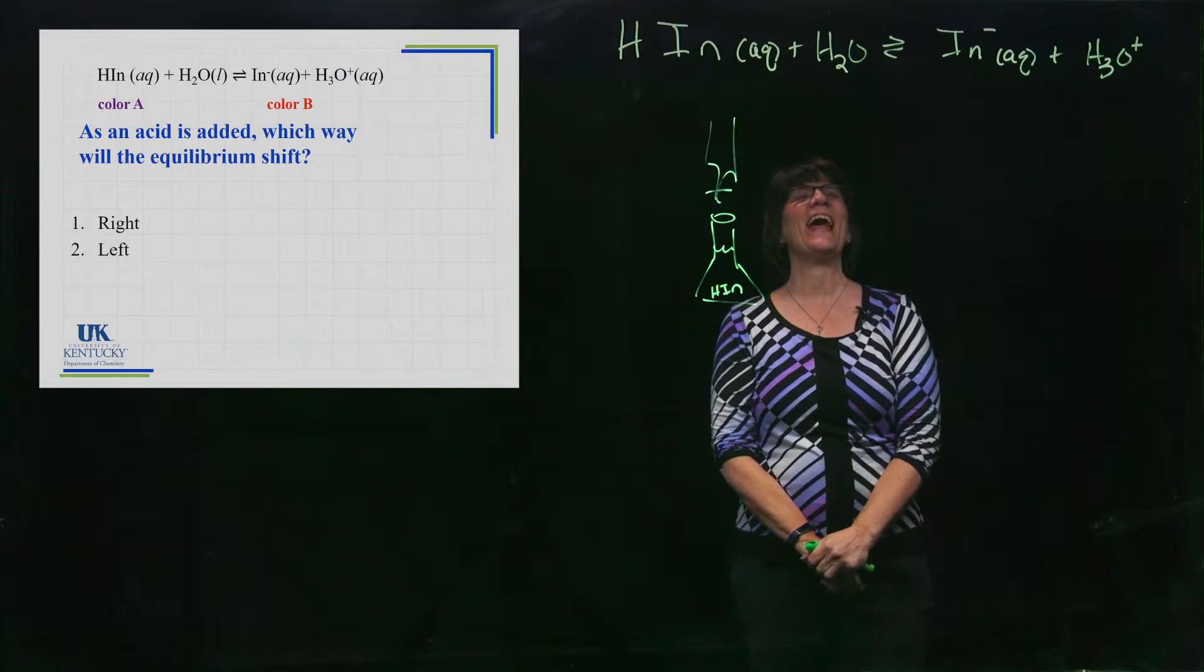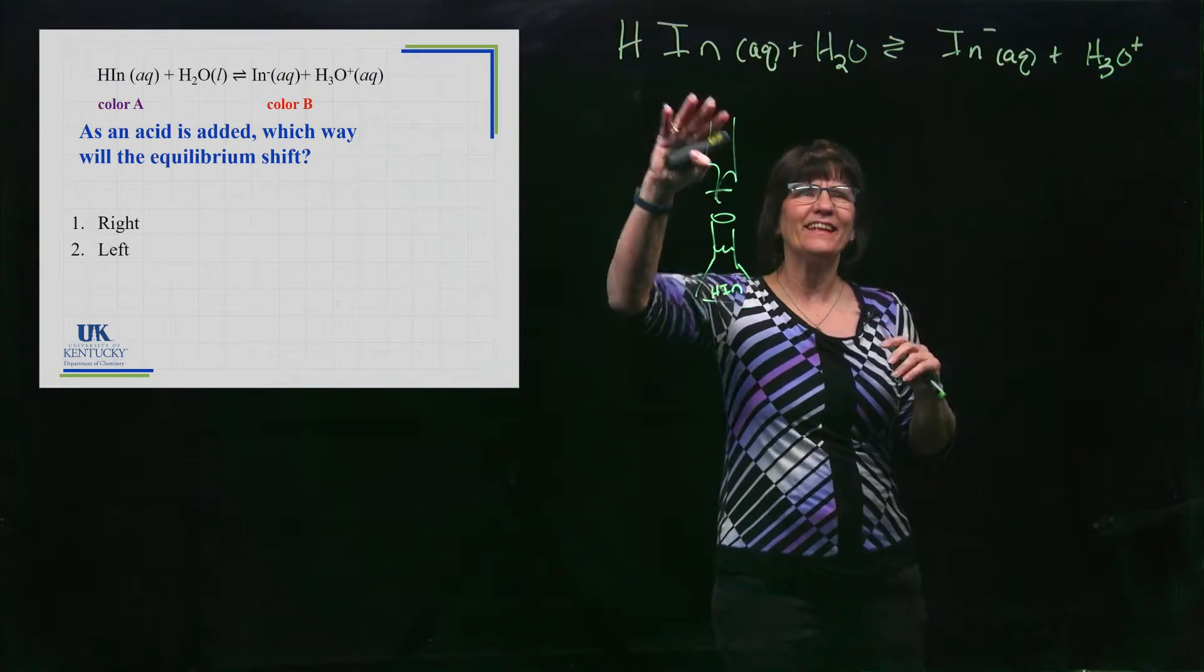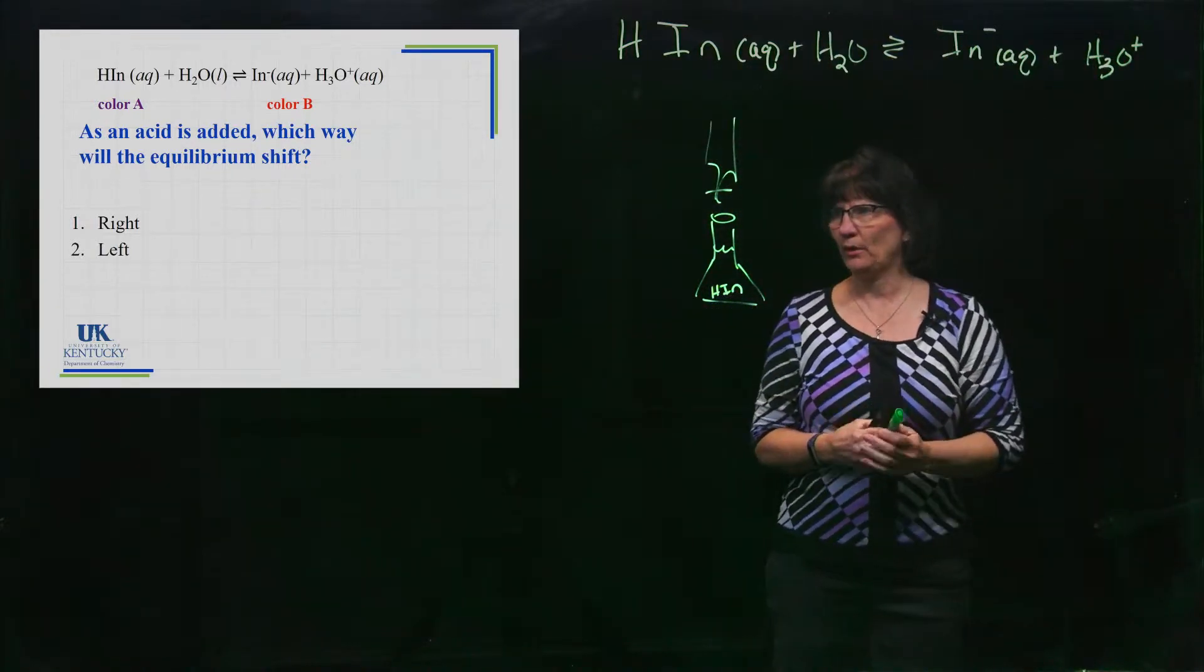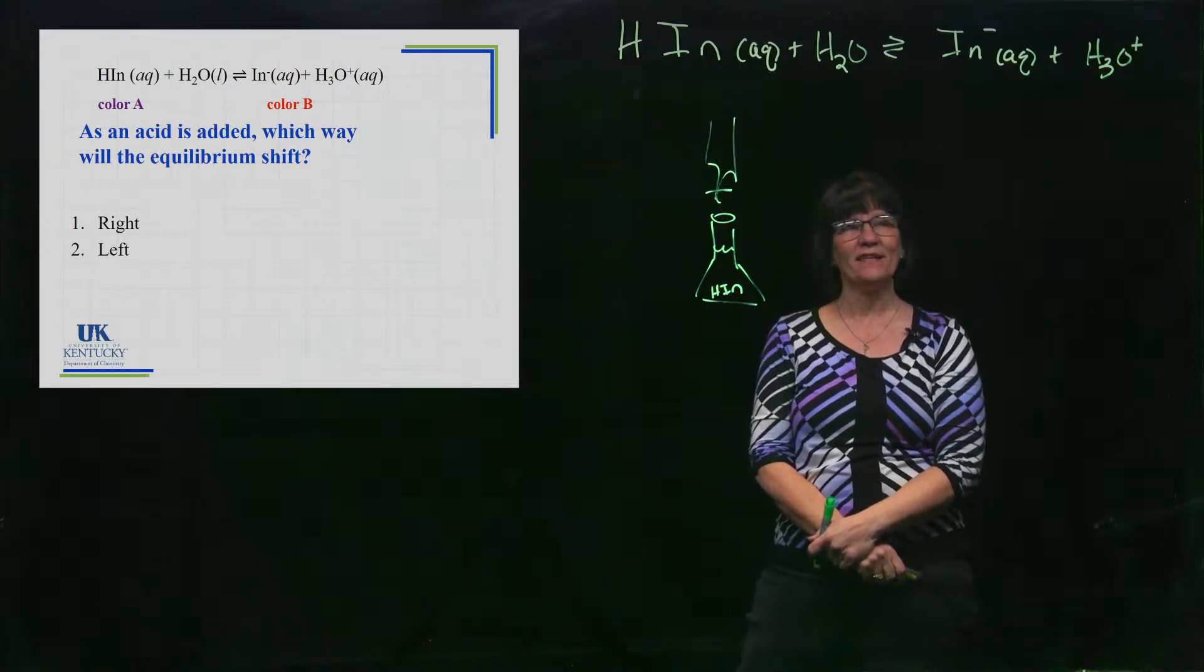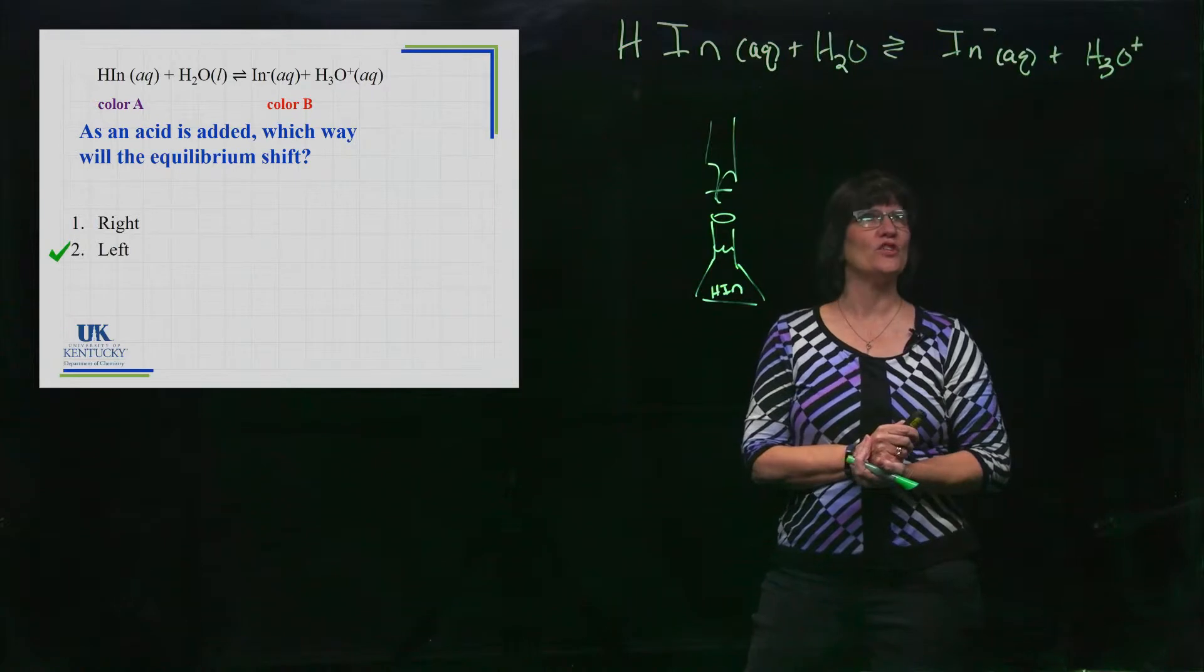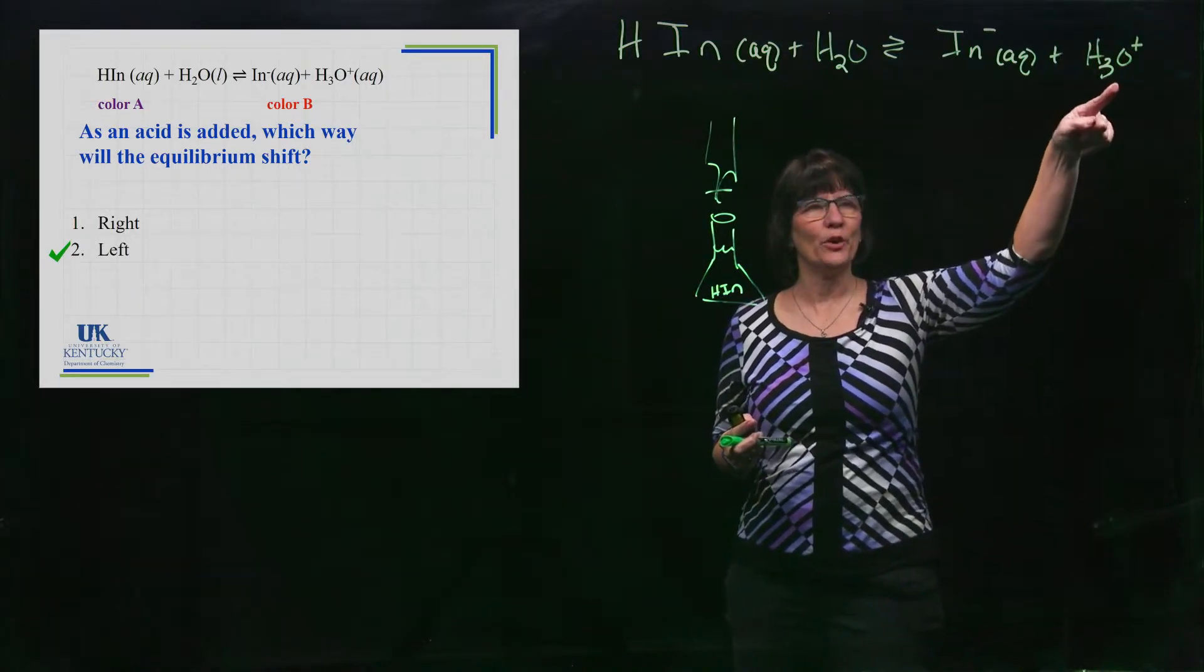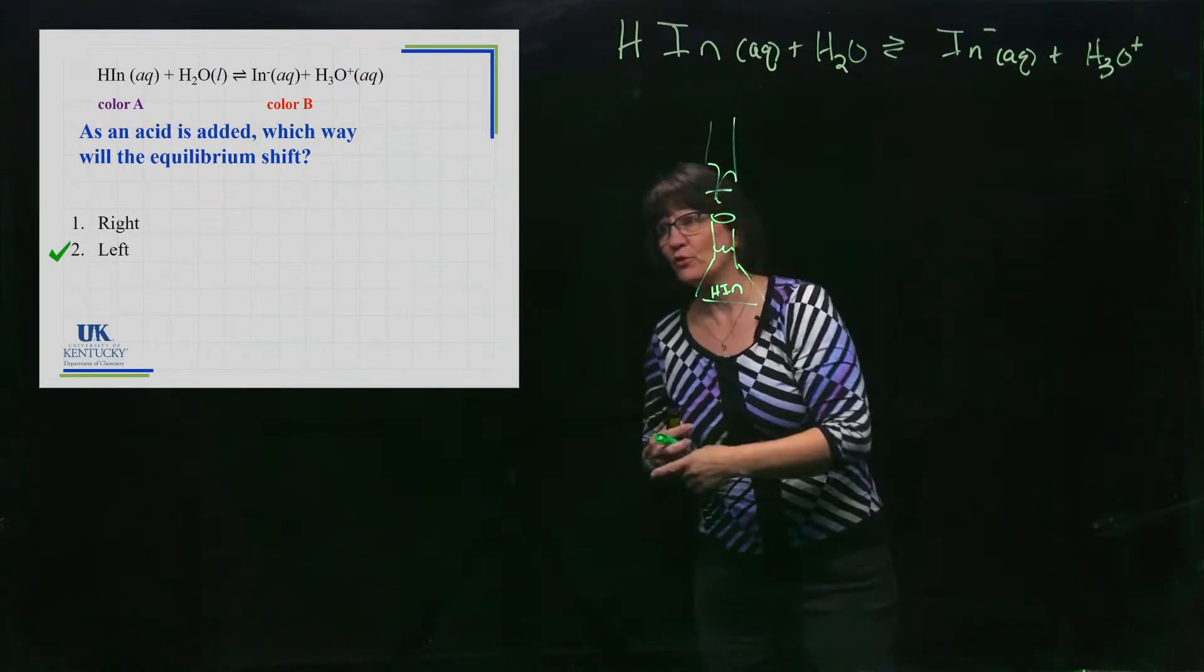Let's say we go in and we add an acid to this indicator. Think about what we're adding and where it would play out in that equilibrium and tell me which way you think this equilibrium would shift by adding an acid. Now this is Le Chatelier's principle taking place. Hopefully you said it's going to shift to the left. If you didn't really know how to work that out, when you add an acid, you are adding this ingredient right here. You are adding H₃O⁺. No matter what acid you add, you're increasing this. And it tries to use it up. So it shifts it to the left.